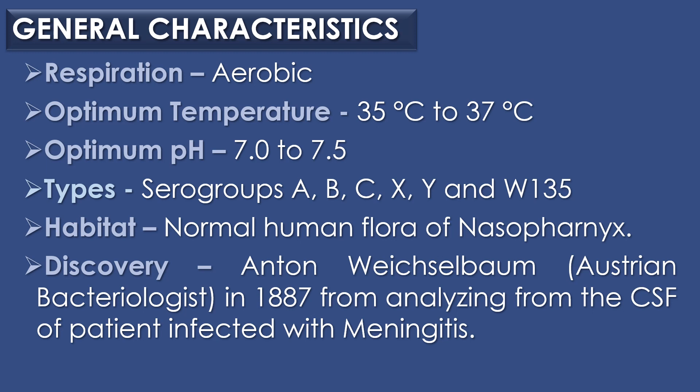Neisseria meningitidis is categorized into various serogroups: A, B, C, S, Y, and W-135. The habitat of Neisseria meningitidis is that it is a normal human flora of the nasopharynx region. It was discovered by the Austrian bacteriologist Anton Weishalbem in the year 1887, from analyzing the cerebrospinal fluid (CSF) of a patient infected with meningitidis.